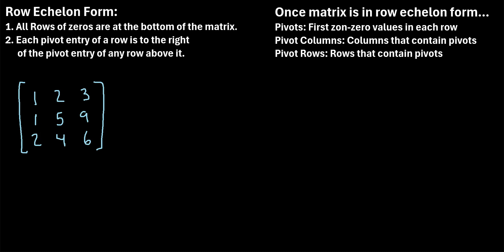In this video, we'll talk about how to find the pivots, the pivot columns, and the pivot rows of a matrix. Before we can find the pivots, the pivot columns, and the pivot rows, we need to make sure that a matrix is first in row echelon form.